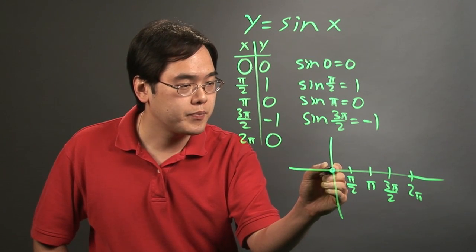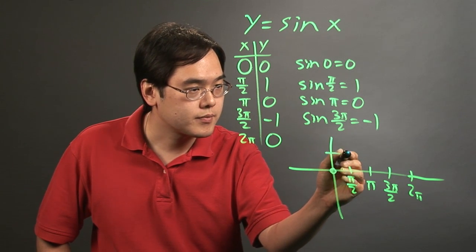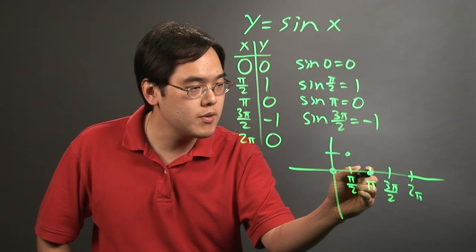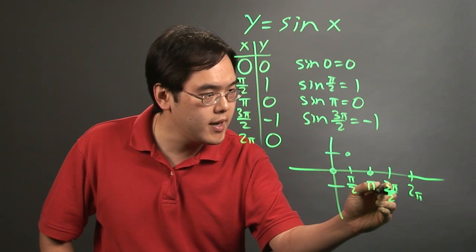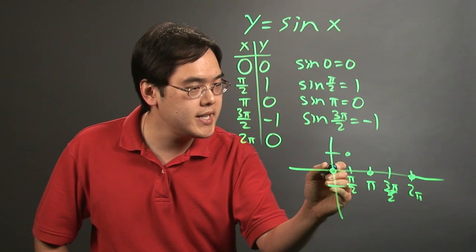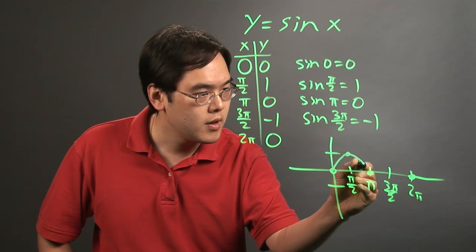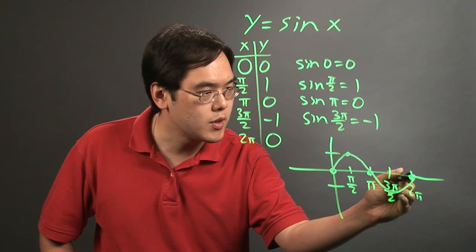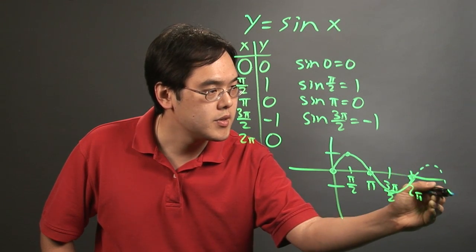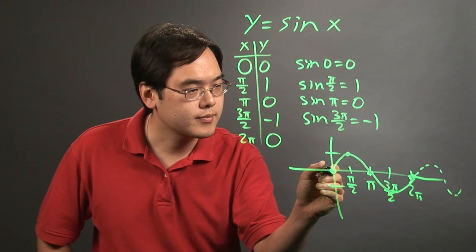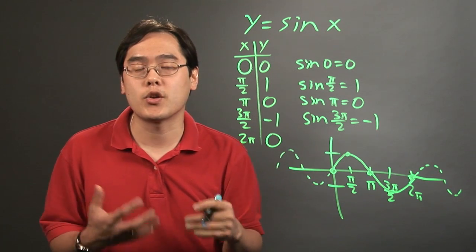When x is 0, y is 0, pi over 2 is 1, pi is 0, 3pi over 2 is going to be right here, and then 2pi is like this. So the idea here is, and this is going to be a rough sketch, a wave goes like this. The graph does continue, so let me just draw it going this way to show you that the graph does continue.